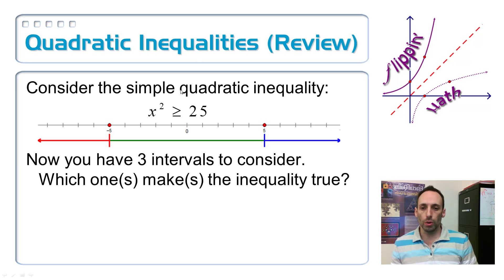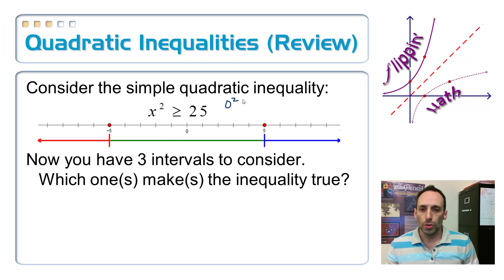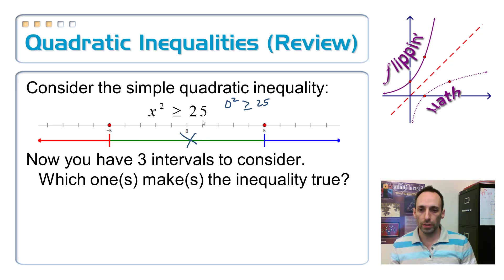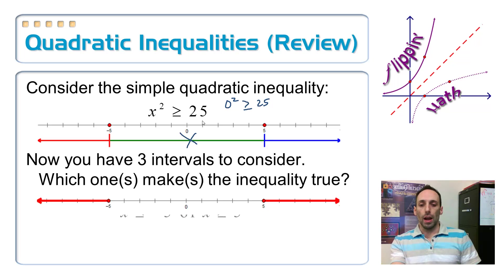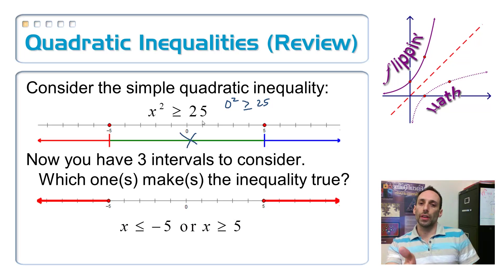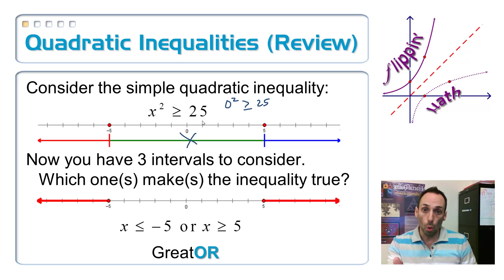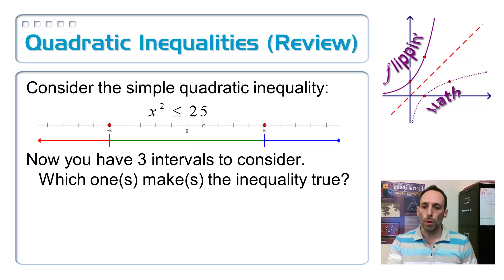If I take 0 and plug it in: 0² — is that greater than or equal to 25? No, 0 is not greater than 25. So it can't be the middle part. It must be the stuff on the outside. So I write that as x ≤ −5 or x ≥ 5. And it's a greater-or inequality — that was the little shortcut.